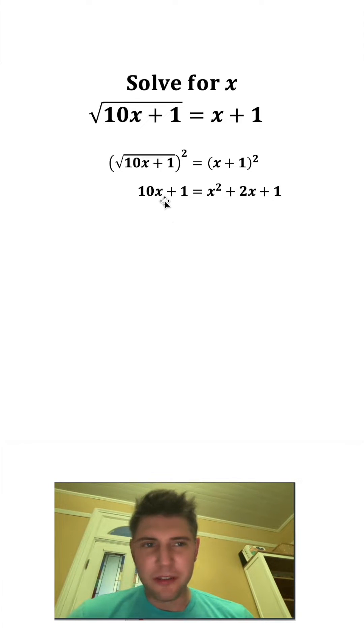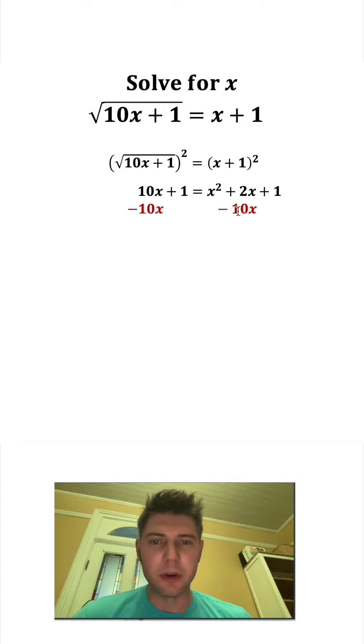Let's move all this stuff from the left side over to the right side. So we're going to subtract 10x from both sides, and then subtract 1 from both sides. So on the left-hand side, all this stuff cancels, and we just have 0.